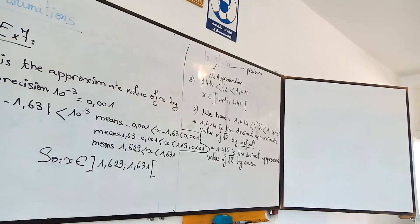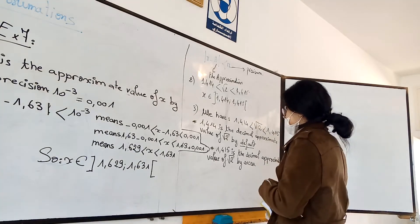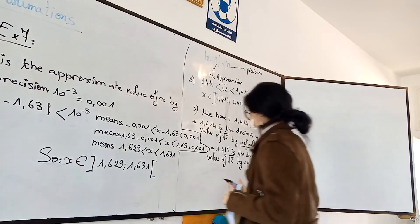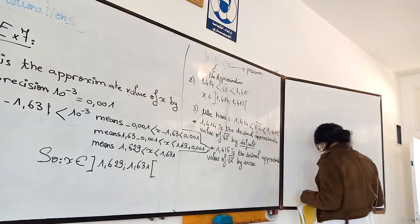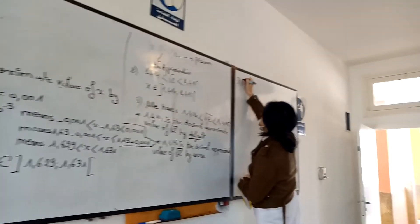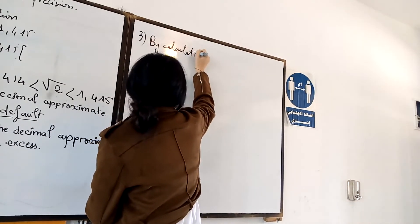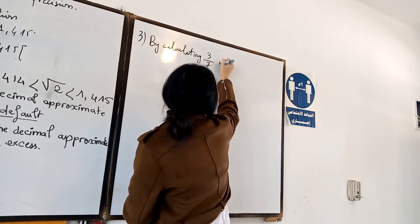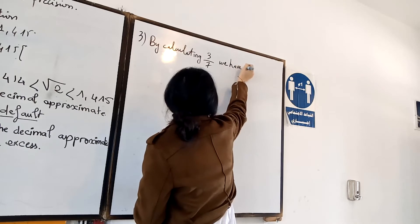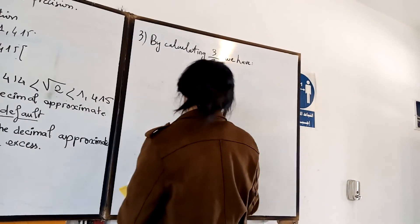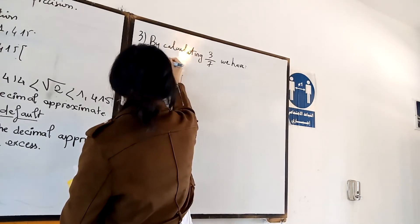The last one: find the approximate value of the number 3 over 7 by default and by excess with precision 10 power minus 3. What is the approximate value in this case?